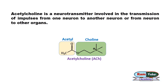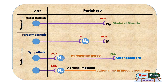Acetylcholine is a neurotransmitter involved in the transmission of impulses from one neuron to another neuron, or from a neuron to an organ. In the peripheral nervous system, in the case of the somatic nervous system, acetylcholine is released by the motor neuron at the neuromuscular junction, which is present between the motor neuron and the skeletal muscle.